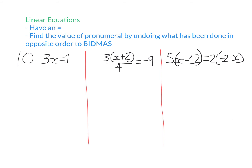Linear equations have an equal sign, and we need to solve them by finding a value for the pronumeral that makes the statement true. You undo everything done to the pronumeral in the opposite order to BIDMAS. In this example, x has been multiplied by negative 3 and 10 has been added. The first thing to do is subtract 10 from both sides — 10 minus 10 cancel out — leaving negative 3x equals negative 9.